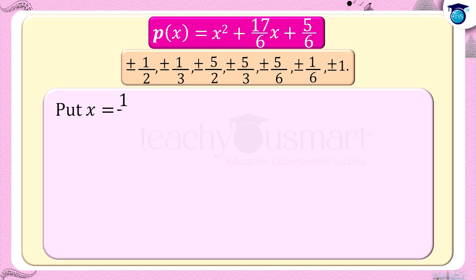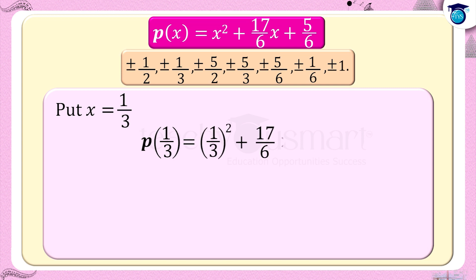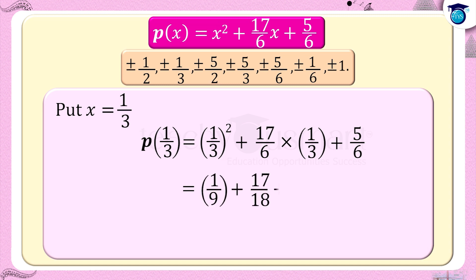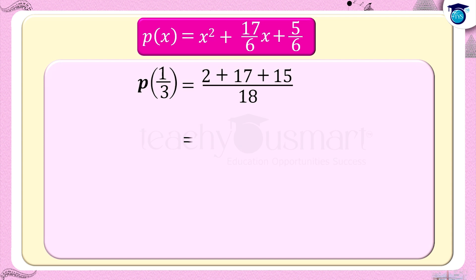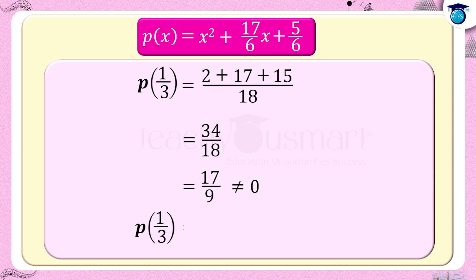Put x equals 1/3: p(1/3) equals (1/3) squared plus 17/6 times 1/3 plus 5/6, equals 1/9 plus 17/18 plus 5/6, equals (2 plus 17 plus 15) divided by 18, equals 34/18, which is not equal to 0. That is, p(1/3) is not equal to 0.